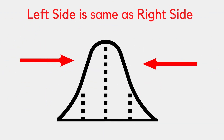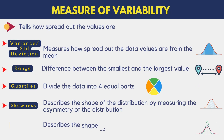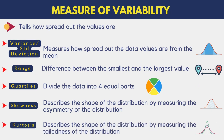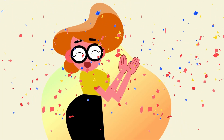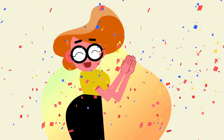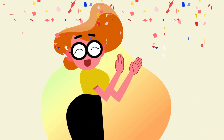We call a distribution symmetric when it looks the same to the left and the right of the center point. And fifth is kurtosis, which describes the shape of the distribution by measuring the tailedness — that is, it measures whether the distribution is heavy-tailed or light-tailed relative to the normal distribution. That's it for today's video. We will cover each of these in more detail in our upcoming video.